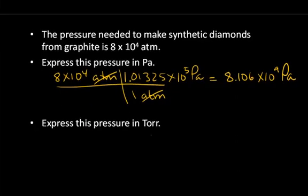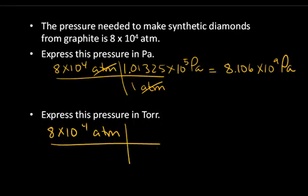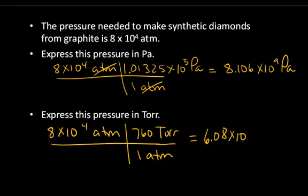Express this pressure in torr. So starting with 8 times 10 to the fourth atmospheres, express that unit in torr. We know from the previous table that one atmosphere is equal to 760 torr. And a torr is the same as a millimeter of mercury. And if you do the math there, you get 6.08 times 10 to the seventh torr when you make that conversion.